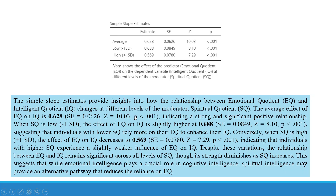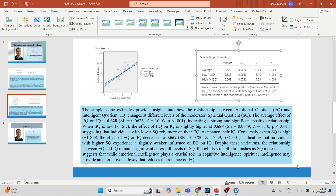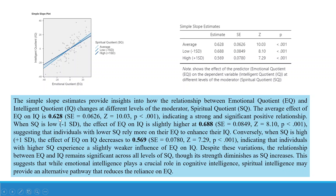Now let's examine the simple slope estimates. These provide insights into how the relationship between Emotional Quotient and Intelligent Quotient changes at different levels of the moderator, Spiritual Quotient.